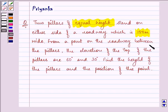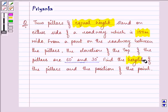From a point on the roadway between the pillars, the elevation of the top of the pillars are 60 degrees and 30 degrees. Find the height of the pillars and the position of the point.